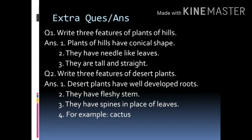Question number 2. Write 3 features of desert plants. Answer: number 1, desert plants have well-developed roots. They have a fleshy stem. They have spines in place of leaves. For example, cactus.